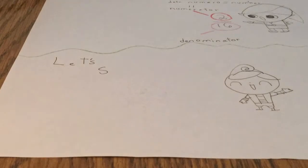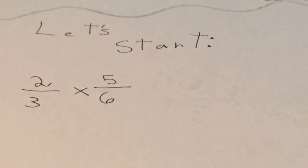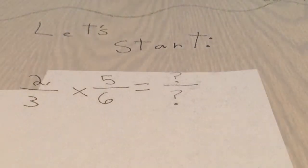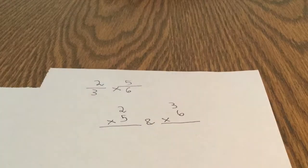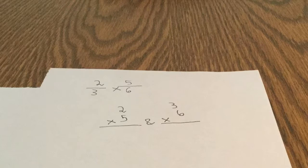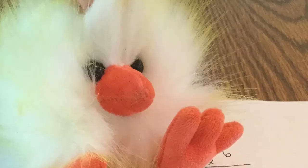So, let's start. Our first problem is going to be two-thirds times five-sixths. What does it equal? Let's find out. So we've got two-thirds times five-sixths. We get the two numerators and multiply them, and the two denominators and multiply them.